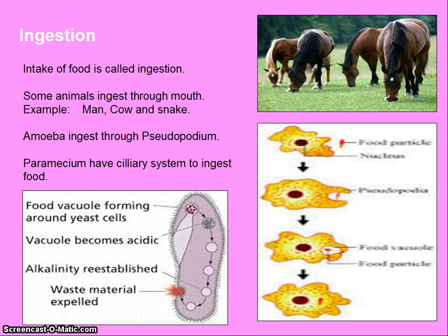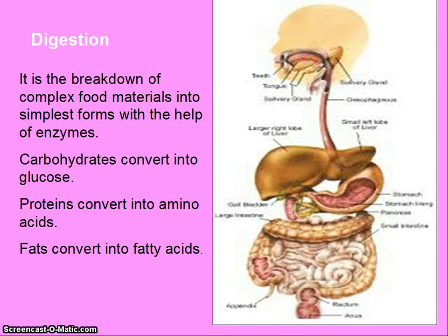Ingestion is the intake of food. Some animals ingest through the mouth — for example, man and cow. Snake and amoeba ingest through pseudopodium. Paramecium has a ciliary system to ingest food. Digestion is the breakdown of complex food materials into simplest forms with the help of enzymes. Carbohydrates convert into glucose, proteins convert into amino acids, and fats convert into fatty acids.